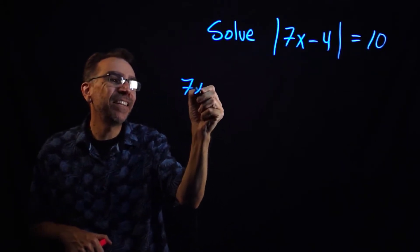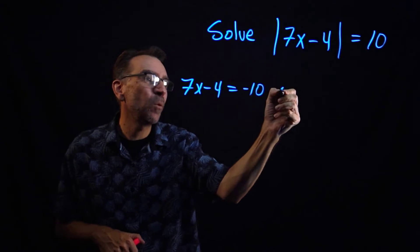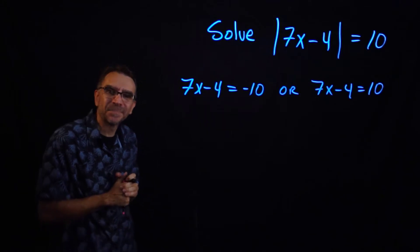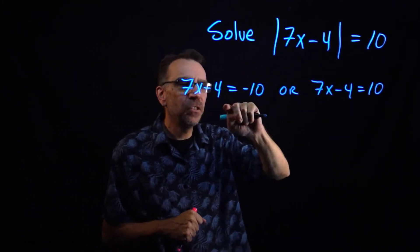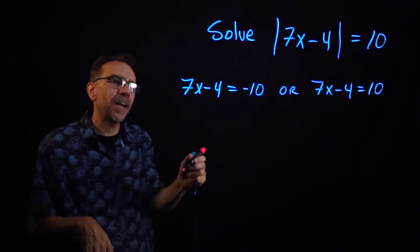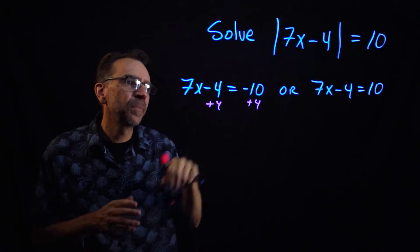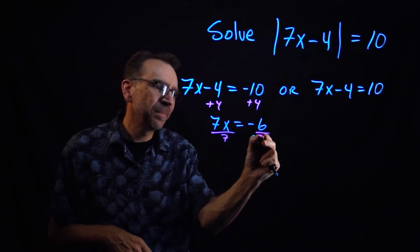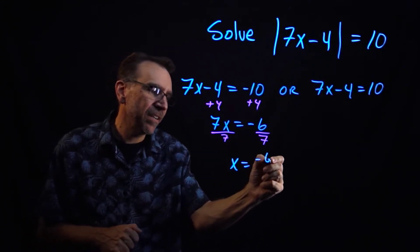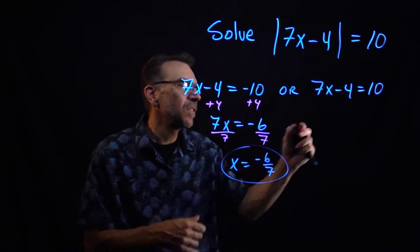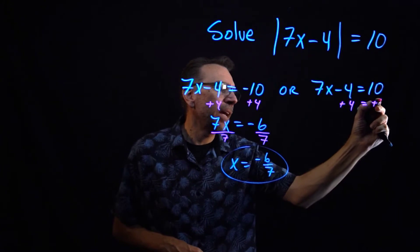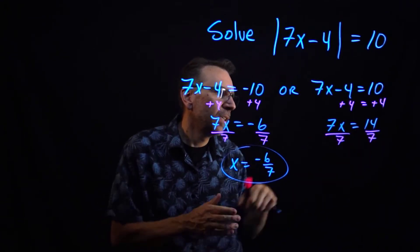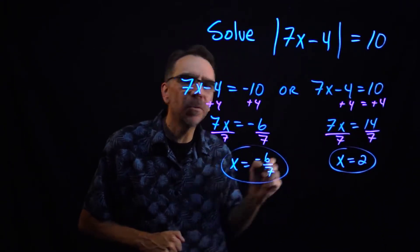When we do that we get 7x minus 4 equals negative 10, or 7x minus 4 equals positive 10. Once we do this we have two equations to solve with regular algebra. Adding 4 gives us 7x equals negative 6, and dividing by 7 gives x equals negative 6/7. For the other equation, adding 4 gives 7x equals 14, and dividing by 7 gives x equals 2.